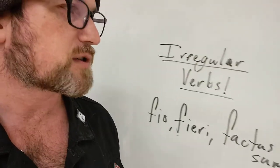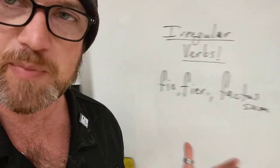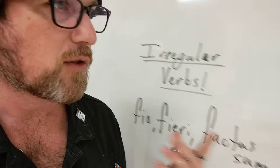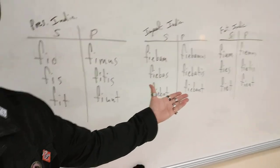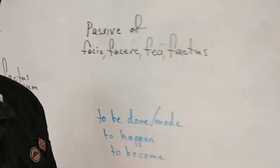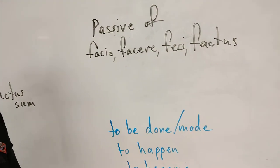So if you just follow the other rules that we already know, you'll be fine in all of those. You just need to know that there is this special verb that looks like it's active and has a bunch of active forms, but it's still going to be translated as the passive of to do or to make.